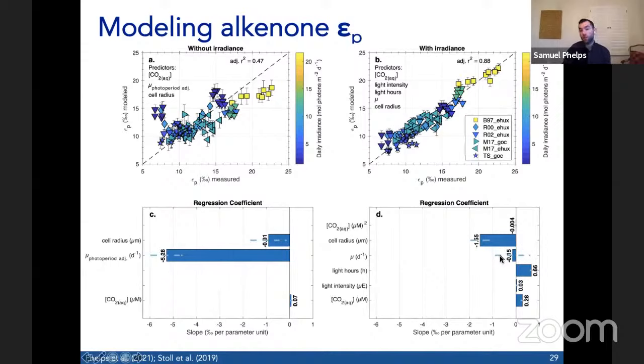When we include irradiance components here on the right - the light hours and light intensity - we can explain almost 90% of the variance in EP in this culture dataset. An important thing to note is that growth rate, at least in this model the way it's parameterized, does not appear to have a significant influence in the data. The p value is about 0.5, so it's not statistically significant. That means moving forward, as we look into the environment, we will not have to quantitatively constrain growth rate using this model.